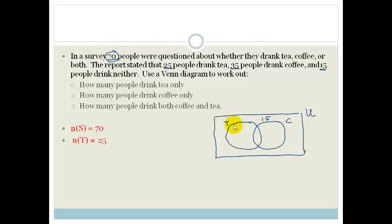They are out here. So we know that the number of people that drink tea is 25 and the number of people that drink coffee is 35. So since 15 people don't drink either tea or coffee...